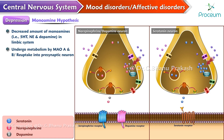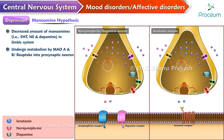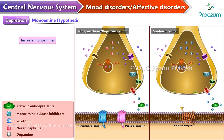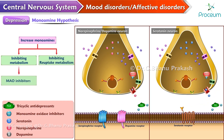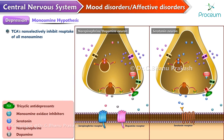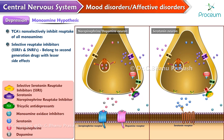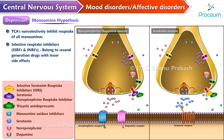These monoamines either undergo metabolism by monoamine oxidase type A or type B, or they may undergo reuptake into the presynaptic neuron. Hence, the main aim of treatment is to increase the monoamines by inhibiting either the metabolism or the reuptake, by giving monoamine oxidase inhibitors or tricyclic antidepressants respectively. The tricyclic antidepressants non-selectively inhibit the reuptake of all monoamines, and hence selective reuptake inhibitors were synthesized — like selective serotonin reuptake inhibitors and serotonin norepinephrine reuptake inhibitors — which belong to the second generation drugs with lesser side effects.